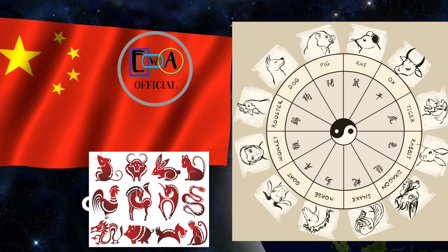The Chinese calendar is divided into 12 months, with each month being divided into two half months. Each month is named after a Chinese zodiac animal in the following order: rat, ox, tiger, rabbit, dragon, snake, horse, goat, monkey, rooster, dog, and pig.